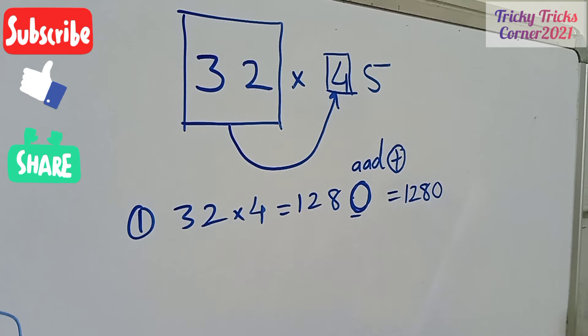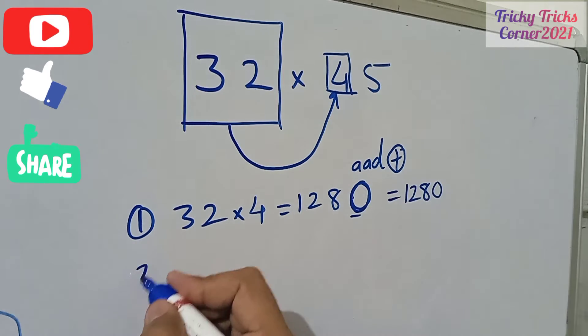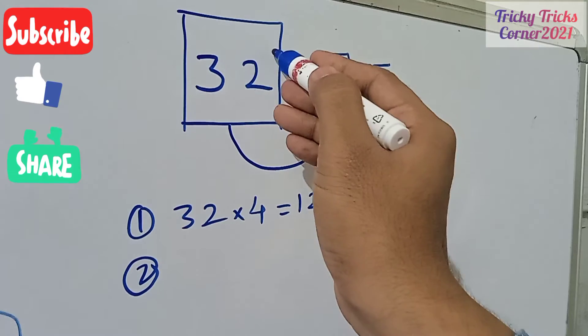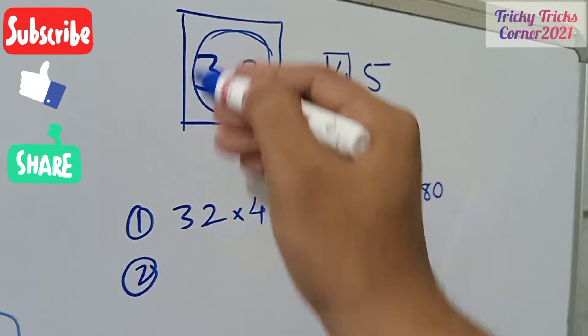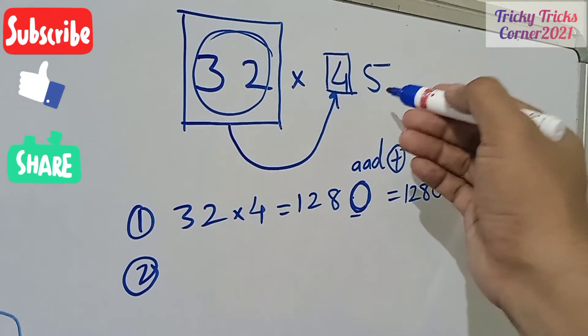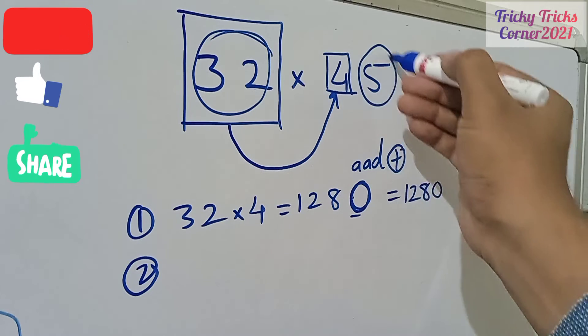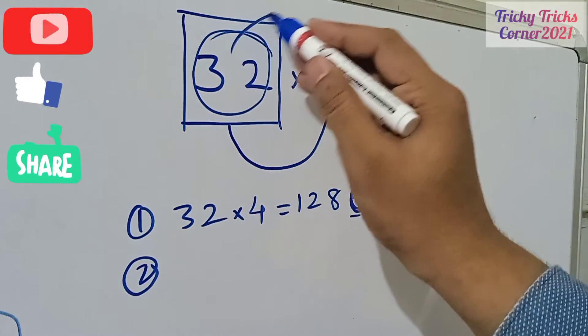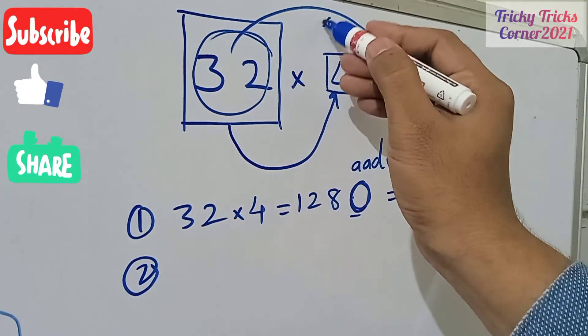Right, now the first step is over. Second step: have this number again, circle this. Now again mark this number 5, the remaining number, right hand side number of the given equation. Have this number over here in the multiplication.